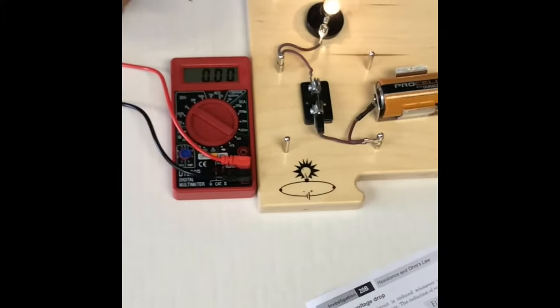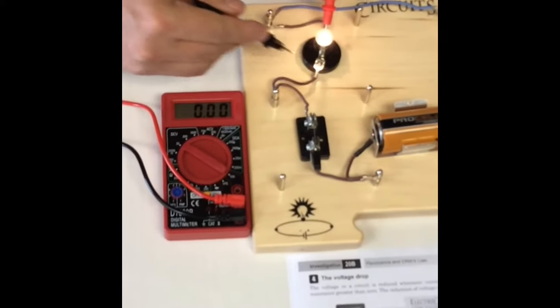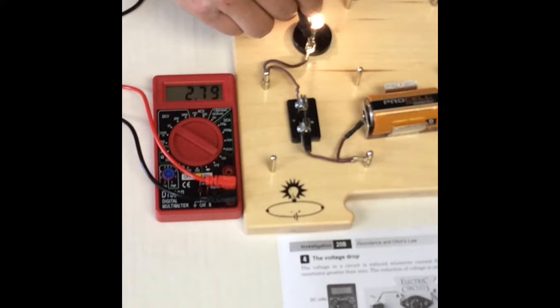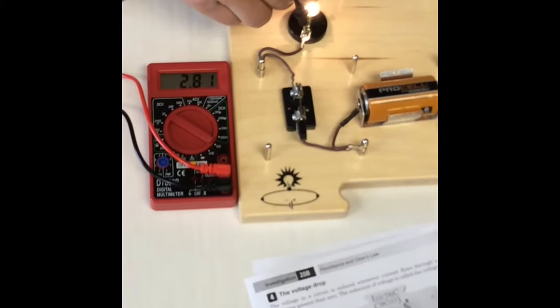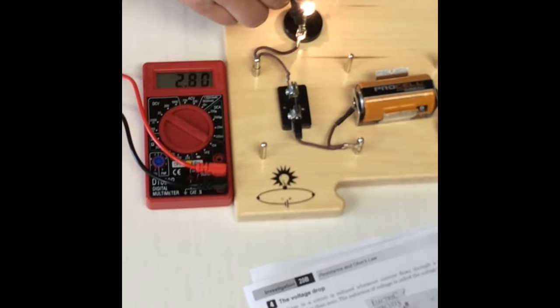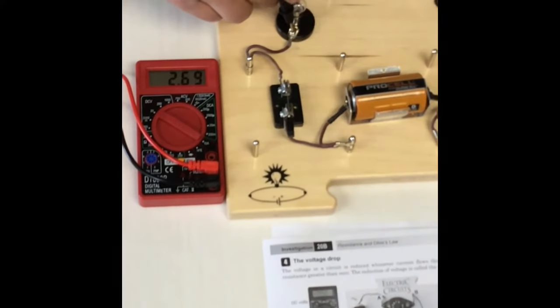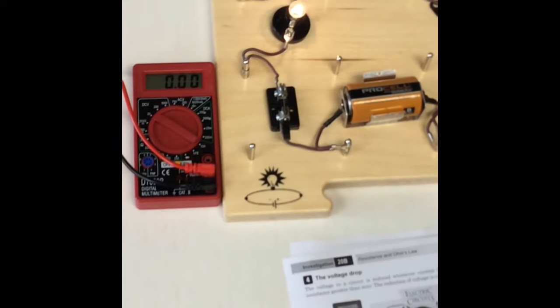And I will do the same with the light bulb. And in that case, we are looking at around 2.8. And those are volts as well. Our observed light output is very, very bright.